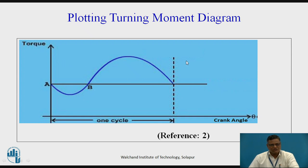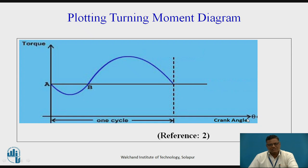The horizontal straight line represents constant torque with reference to the crank angle, illustrating the variation of torque. One cycle refers to the crank angle rotation, and after one cycle the curve repeats. This cycle length may vary with different machines — it might be 180 degrees, 360 degrees, or even 720 degrees.